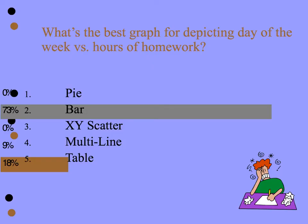Here's a question: what's the best graph for depicting day of the week versus hours of homework? Think about how many variables you have and whether those variables are categorical or continuous. First, let's identify the independent variable — the thing that changes the dependent variable. What are we measuring? Hours of homework — and therefore that is the dependent variable. The independent variable, the item which is changing the dependent variable, is day of the week.